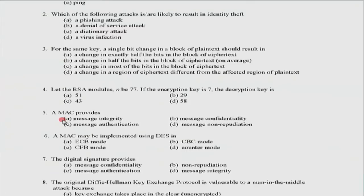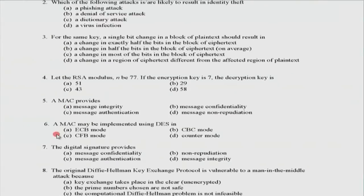Question 6: a MAC may be implemented using DES in ECB — electronic codebook mode — or CBC cipher block chaining mode, or CFB cipher feedback mode, or counter mode. The correct answer is CBC mode, where you encrypt the whole thing and your final encrypted output is the MAC. The answer to question number 6 is B, CBC mode.